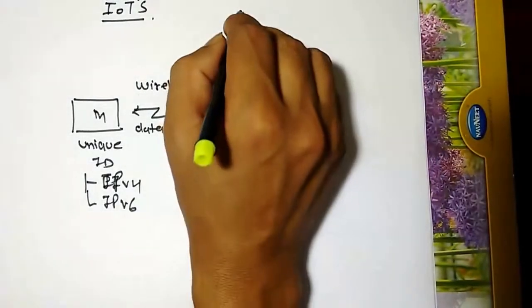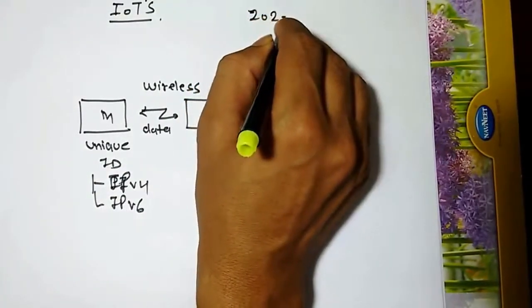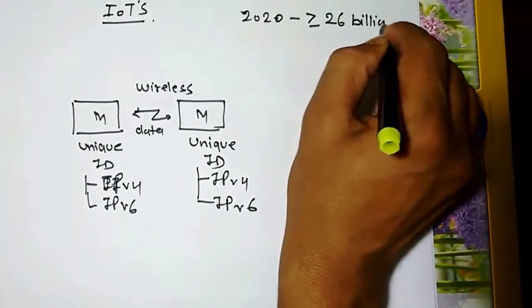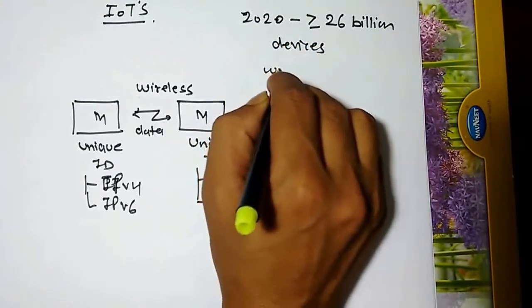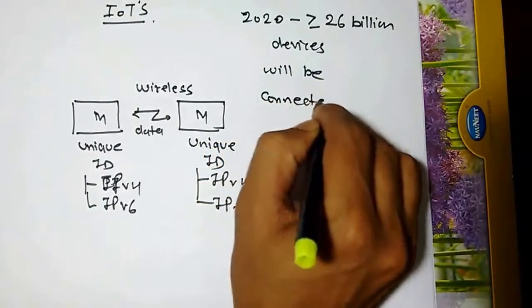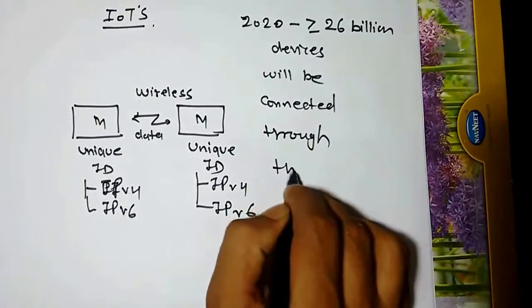This internet of things is a branch of Embedded Systems. It has been predicted that up to 2020 more than 26 billion devices will be connected through the internet. A thing in internet of things can be a person with a heart monitor implant, a farm animal with a biochip transponder, an automobile with built-in sensors to alert drivers when tire pressure is low, or any natural or man-made object that can be assigned an IP address and provided with the ability to transfer data over a network without human interaction.